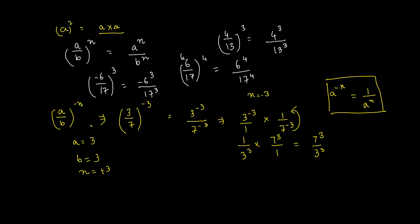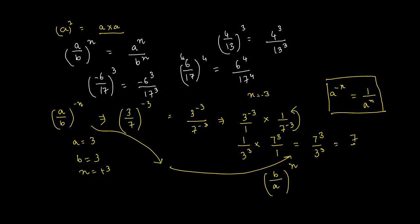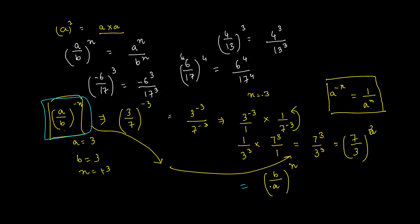Comparing with our formula, we can write this as b upon a to the power n, because this equals 7 upon 3 to the power 3. So effectively, if you have a rational number with a negative power, it equals the reciprocal fraction — the numerator becomes the denominator and the denominator becomes the numerator — and the power changes to positive. That's the answer.